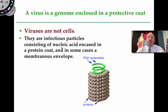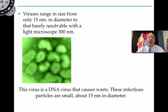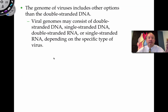So it's a nucleic acid encased in some sort of protein coat, and in some cases a membranous envelope surrounding it. Here is an electron micrograph of a virus — a DNA virus that causes warts. It's very, very small: 15 nanometers in diameter. They range from that small all the way up to 300 nanometers. You're mostly not able to see this with a light microscope; you're going to need an electron microscope. So here's the capsid and inside the nucleic acid.